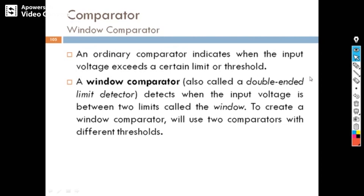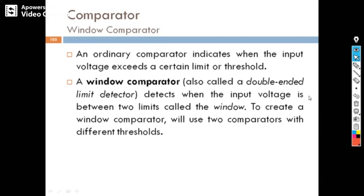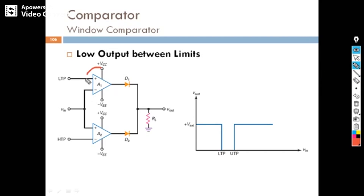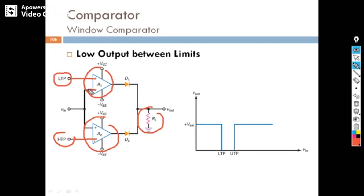The next in this category is the Window Comparator, also called a double-ended limit detector. This is the circuit diagram for the window comparator. We have two comparators, two diodes, and a load resistance. The positive terminal of the first comparator is connected to the Lower Threshold Point (LTP), and the inverting terminal of the second comparator is connected to the Upper Threshold Point (UTP). We are giving our input V-in to both comparators.